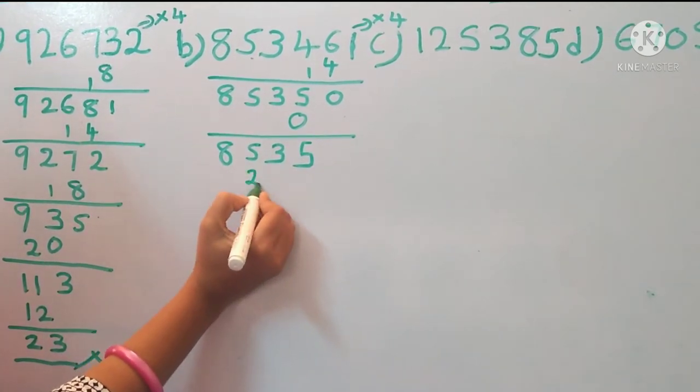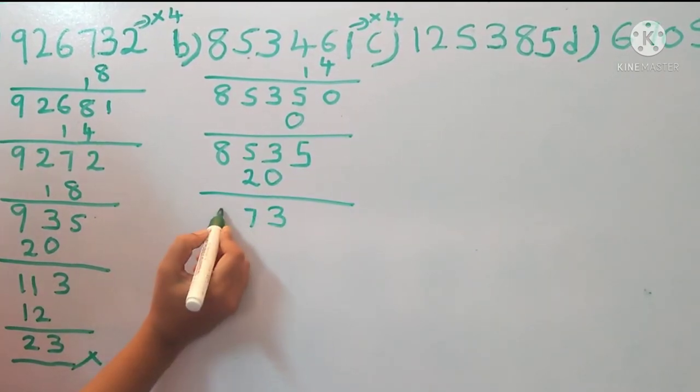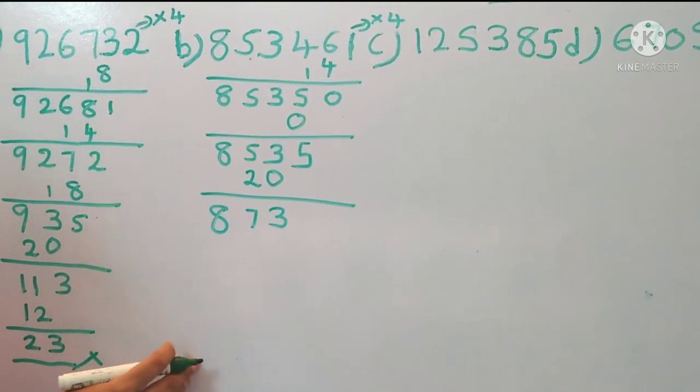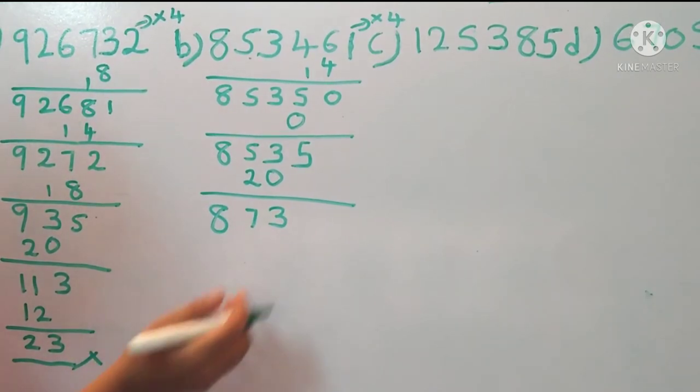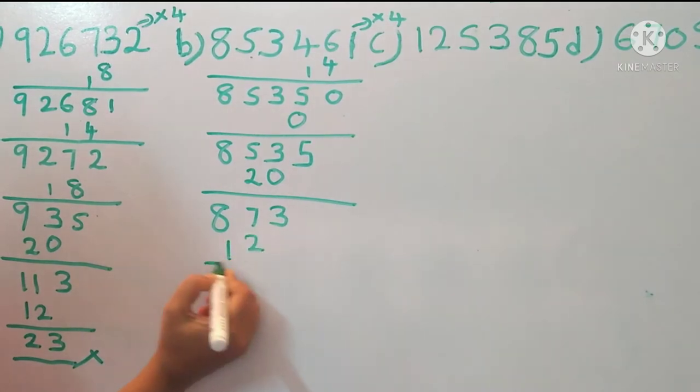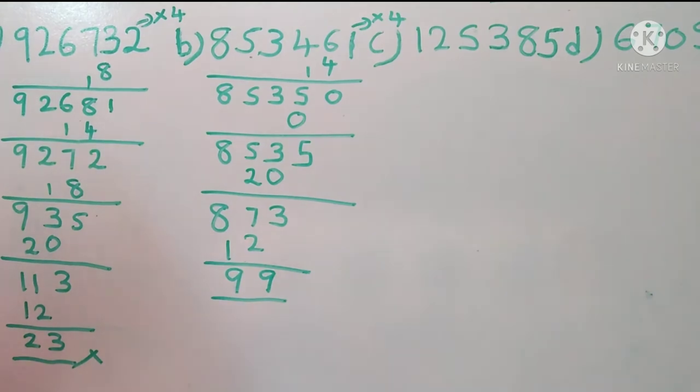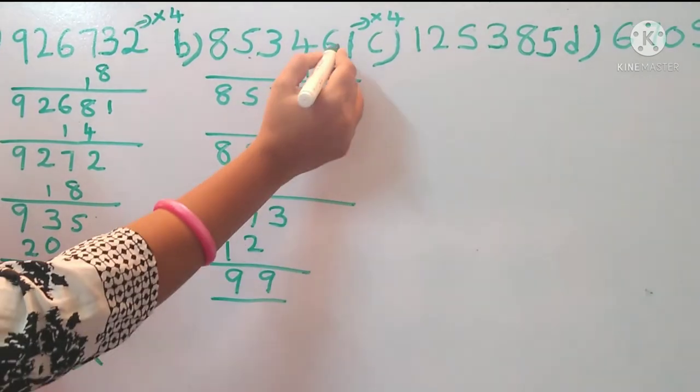5 for the 20, so 3, 7, 8. 3 into 4, 12. So 12, so 9, 9, 99. So which is non-divisible by 13. So the option B is wrong.